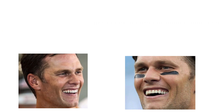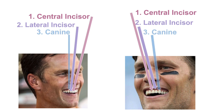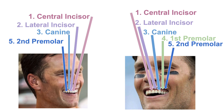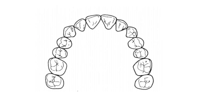But if we look closely at Tom Brady, you can see he's got on both sides his central incisor and his lateral incisor, and his canine. But on his right side, he's actually missing his first premolar. Then he's got a second premolar and his first molar. So on the right side of Tom Brady, he has one tooth missing — the first premolar.